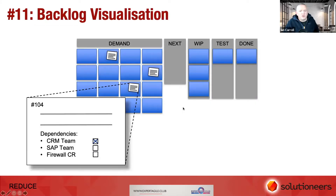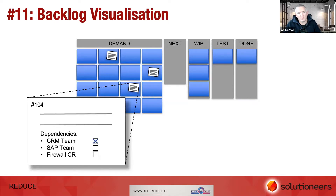Backlog visualization — quite often you can predict dependencies and identify them upfront, so why not visualize that in the backlog on a kanban board? We can see that on this one we're going to be dependent on the CRM team, so there's no point pulling that card into our development cycle until that dependency has been resolved.